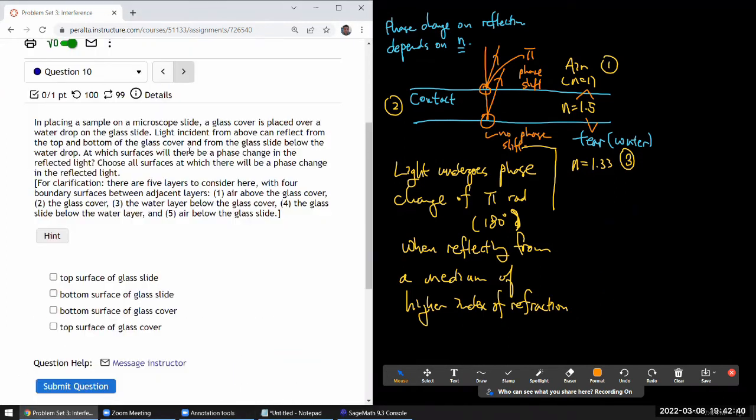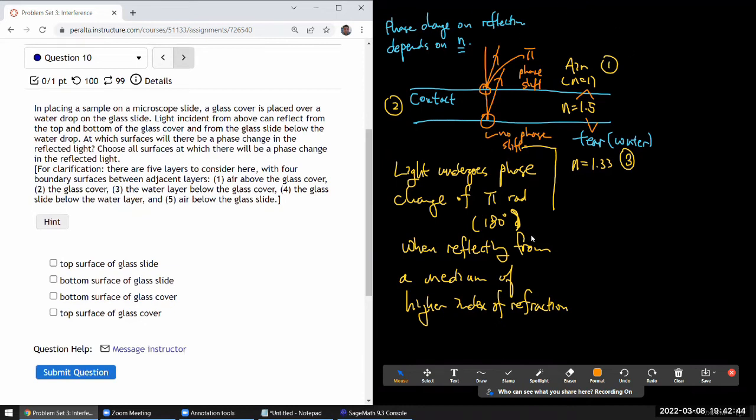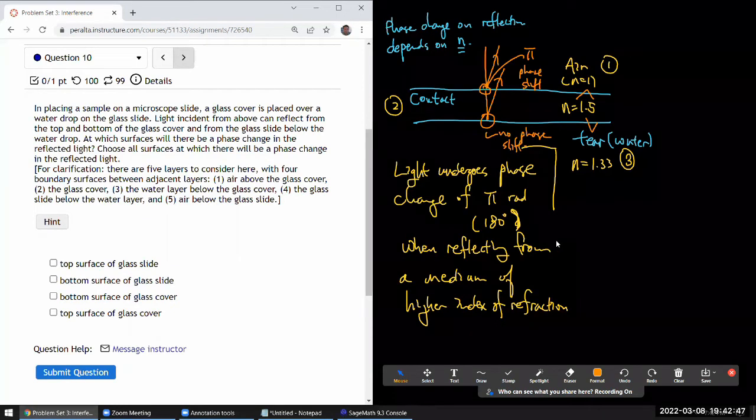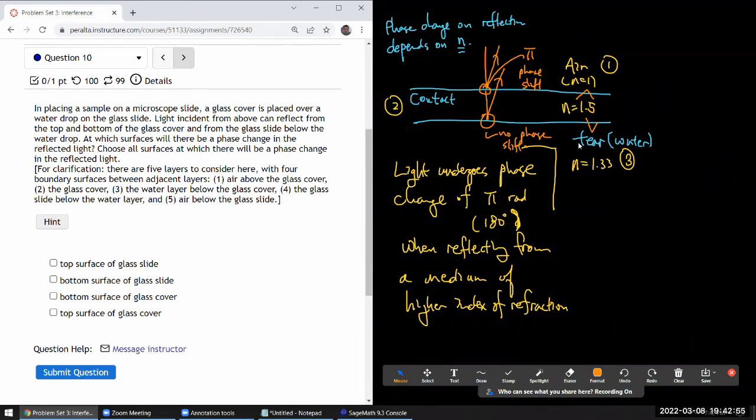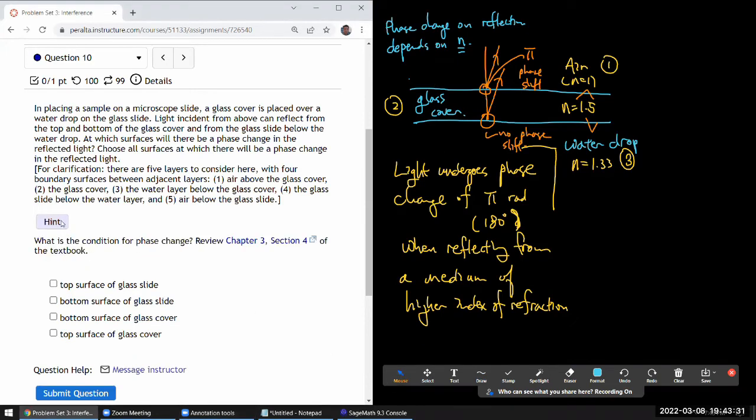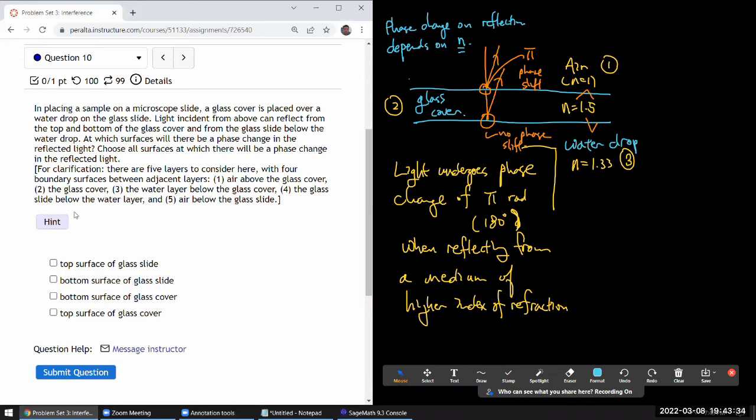There's really not much more to that. Yeah. So that was question nine. Let me look at question 10. Okay, this question seems related. So let me preserve most of this writing just to replace some of the words. So it says in placing a sample on microscope slide, glass cover is placed over a water drop. Okay, so I think I have some kind of a water drop here. So let me keep that. At which surfaces will there be a phase change in the reflected light?